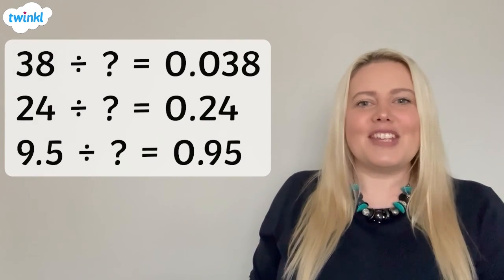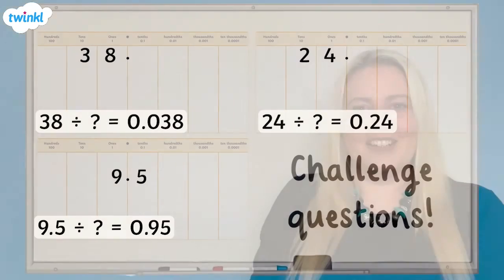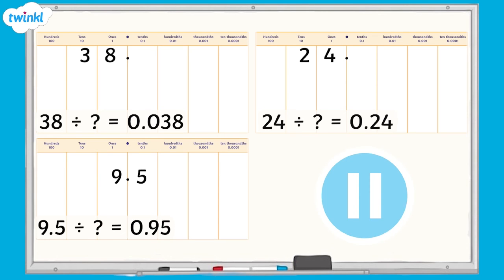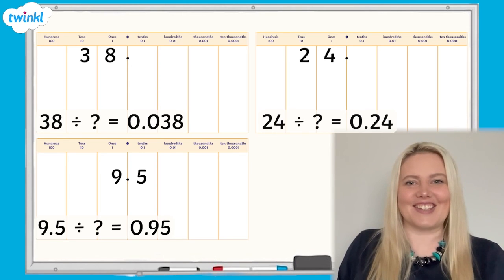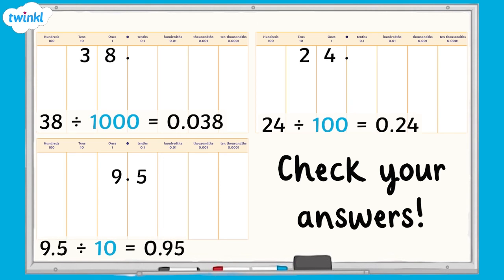I think you're ready for a challenge now. Each of these numbers has been divided by either 10, 100, or 1,000 to give an answer. Pause now and use the place value chart to help you decide what each number has been divided by. Time to check your answers: 38 divided by 1,000 equals 0.038; 24 divided by 100 equals 0.24; 9.5 divided by 10 equals 0.95.